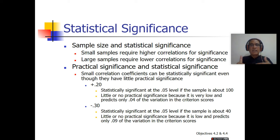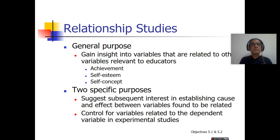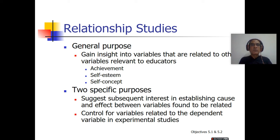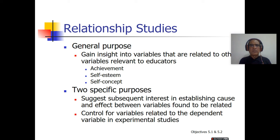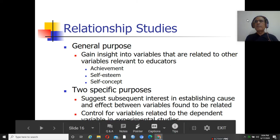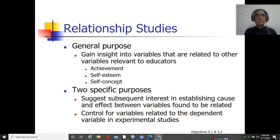While analyzing data in software, we should keep these values in mind. There are two types of popular studies. The first is the relationship study. The general purpose of a relationship study is to gain insight into variables that are related to other variables relevant to educators, like student achievement, self-esteem, and self-concept. A specific purpose is to suggest subsequent interest in establishing cause and effect between variables. The correlation study is entirely different from the experimental study.